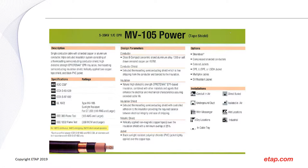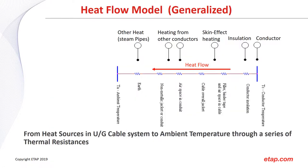Here is a typical data sheet for an EPR MV 105 power cable — for example a 35 kV cable — which provides the maximum TC temperature. This type of data sheet also typically provides an ampacity, but that ampacity is usually under very confined restrictions, such as a 2×2 underground installation, and doesn't take into account many factors. To generalize the heat flow model, the heat flows from the conductor temperature through a series of thermal resistances.